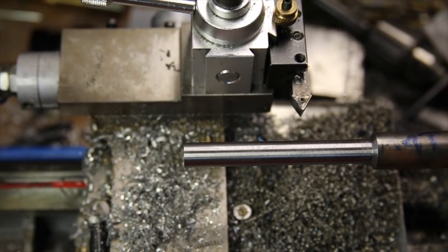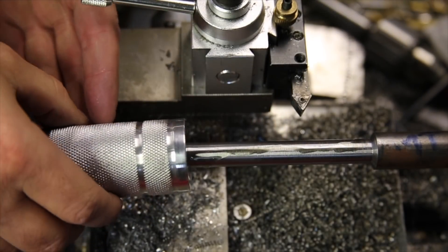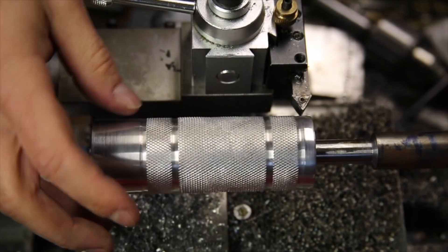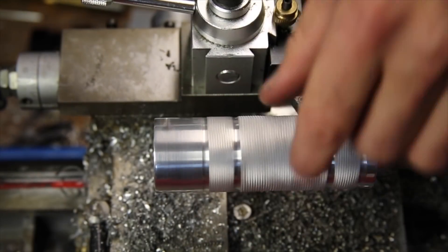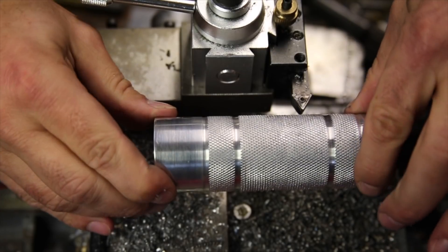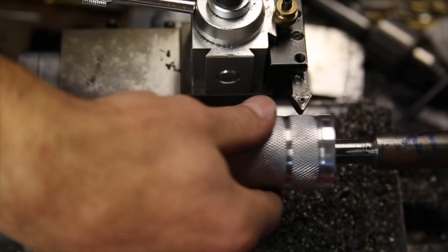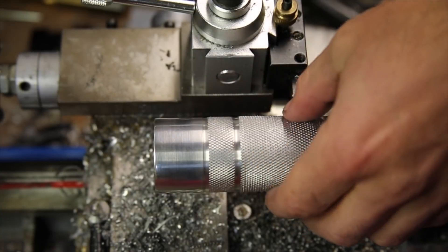I should have been a little bit more careful when approaching the final dimension, but I was finding that the finish was much nicer when taking larger cuts and ended up overshooting the final diameter slightly. Because of that there is a hint of slop between the handle and the guide, but I don't think it will be an issue when tapping.